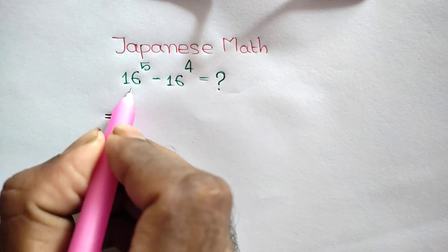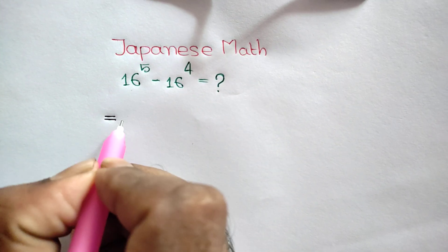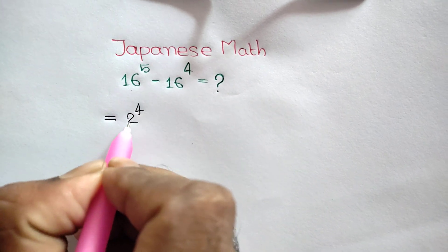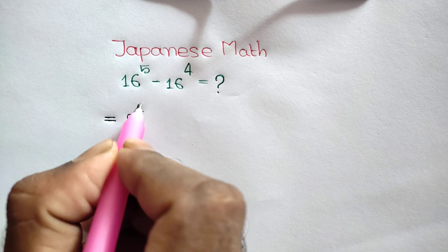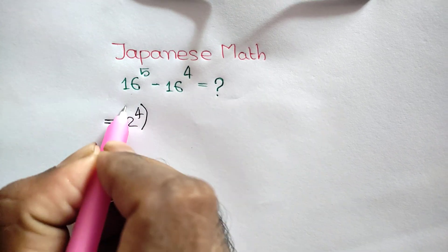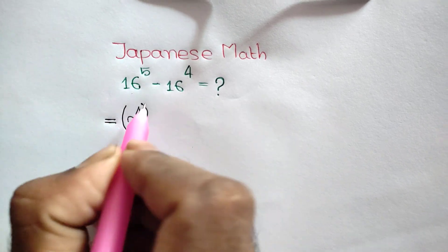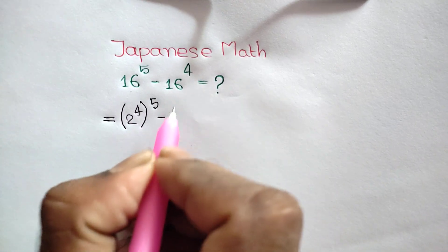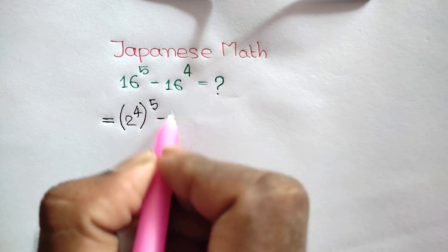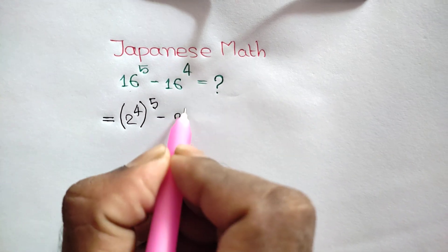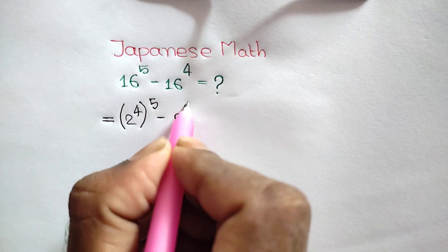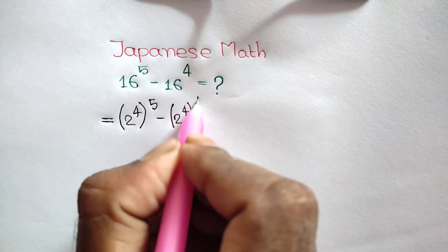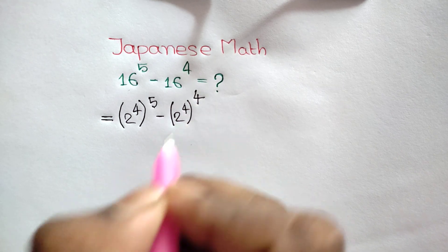16 can be written as 2 to the power 4, because 2 to the power 4 is the same as 16. So we write it as 2 to the power 4, whole to the power 5, minus 2 to the power 4, whole to the power 4.